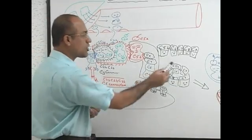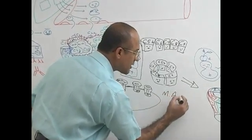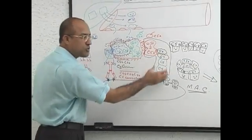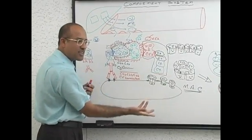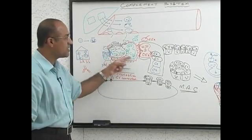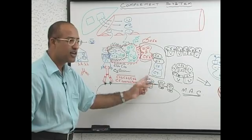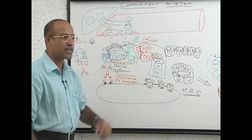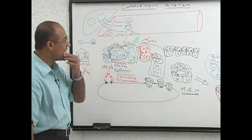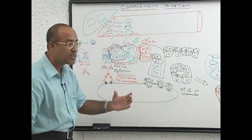This group of activated complement components is called the Membrane Attack Complex. The whole purpose of all this complement activation was to produce Membrane Attack Complexes. The events before this are called early events or early steps in complement activation, and these are called terminal events or late events in activation of complement.